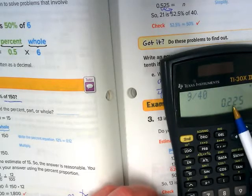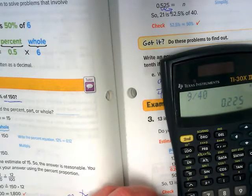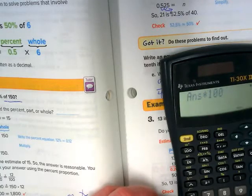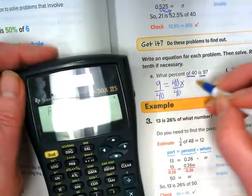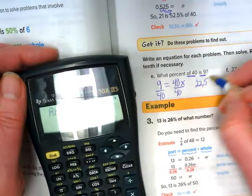So 9 divided by 40 gives us 0.225. And if I move my decimal two places to the right, or multiply times 100 in the calculator, we'll do it for you. You're going to get 22.5%.